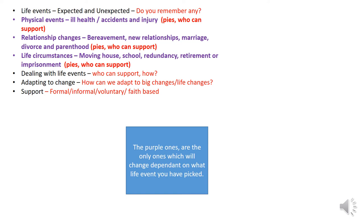We've looked at closing the gap this week and identified the key areas bullet pointed on the left of the screen. You should have looked at an expected and unexpected life event. Along with that, we've found out which ones are physical events, which ones are relationship changes, which ones are life circumstances, how people deal with those life events, how they adapt to them, and who can support them during those changes.